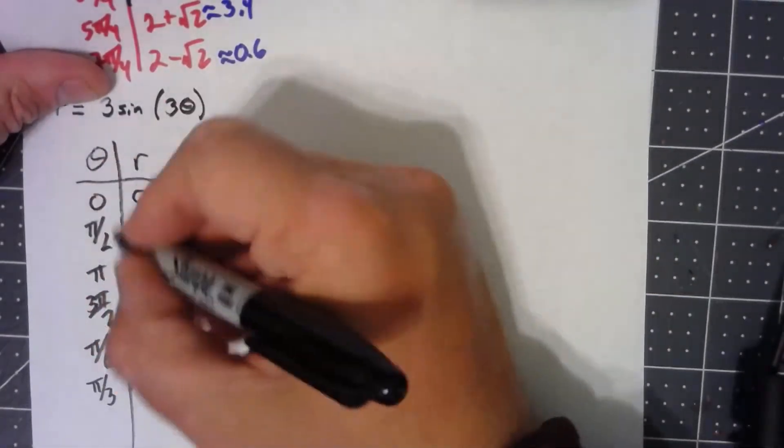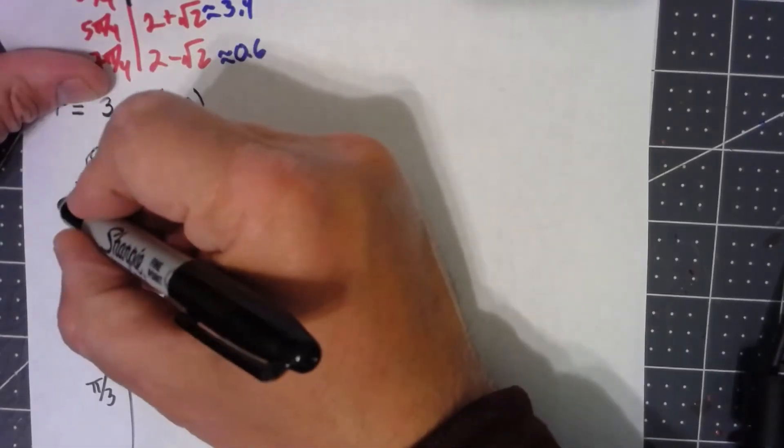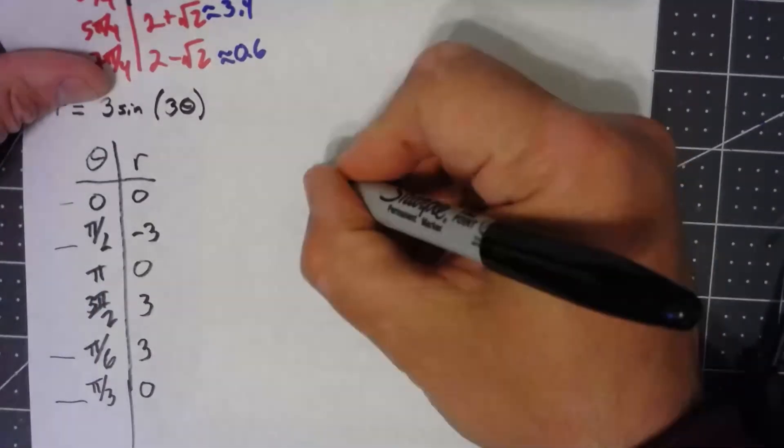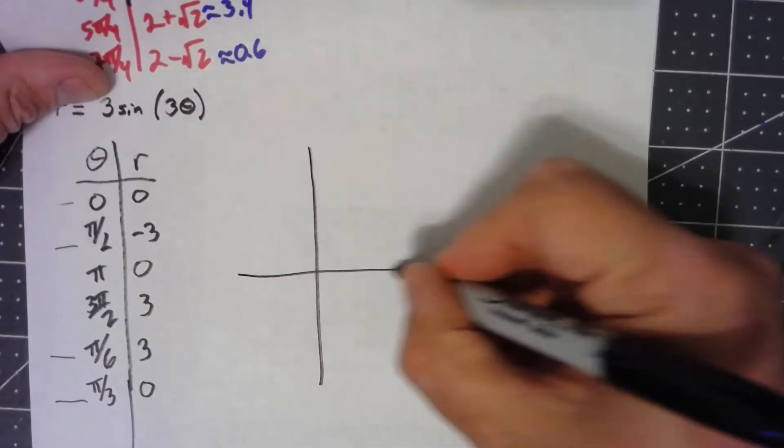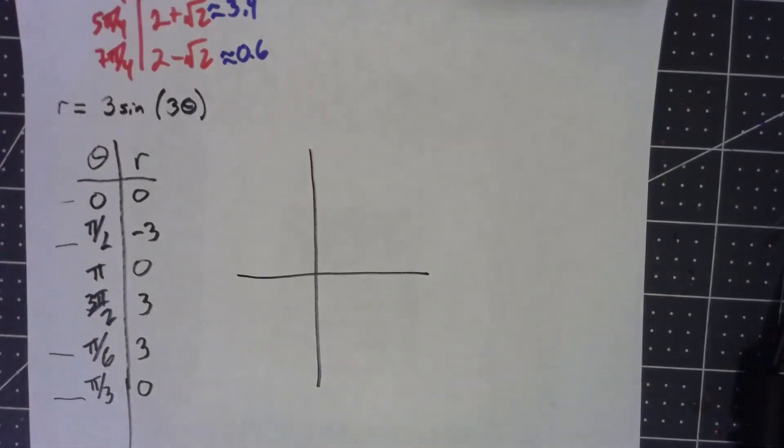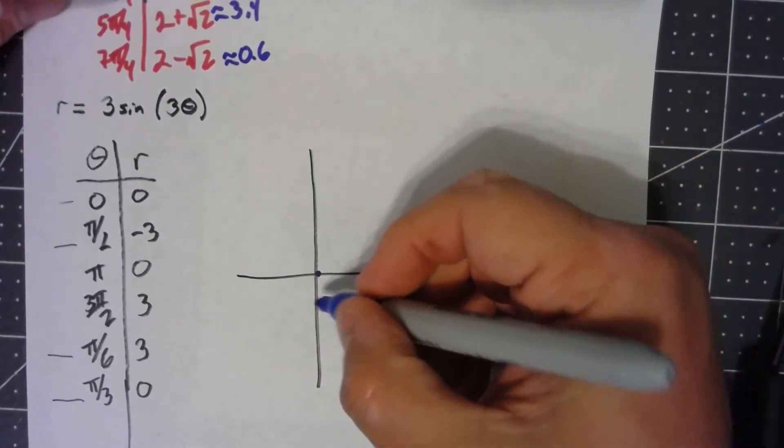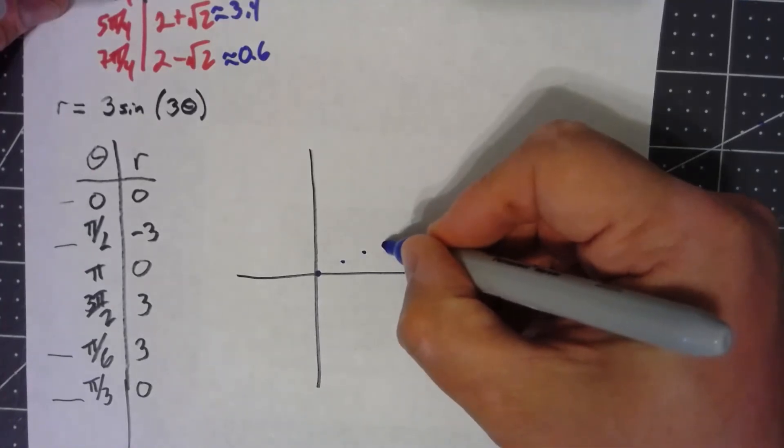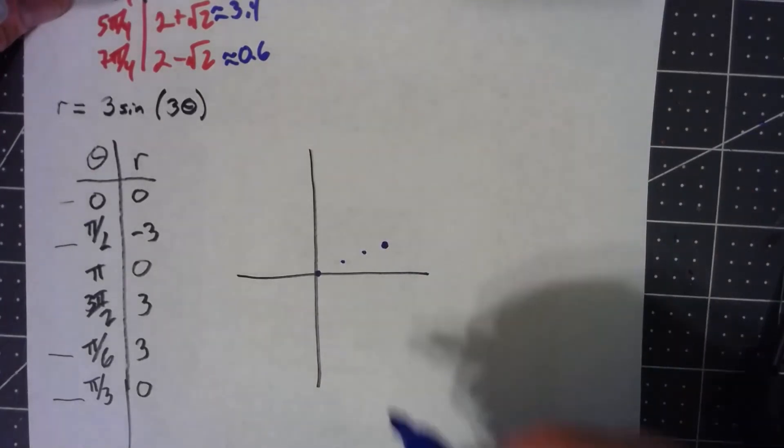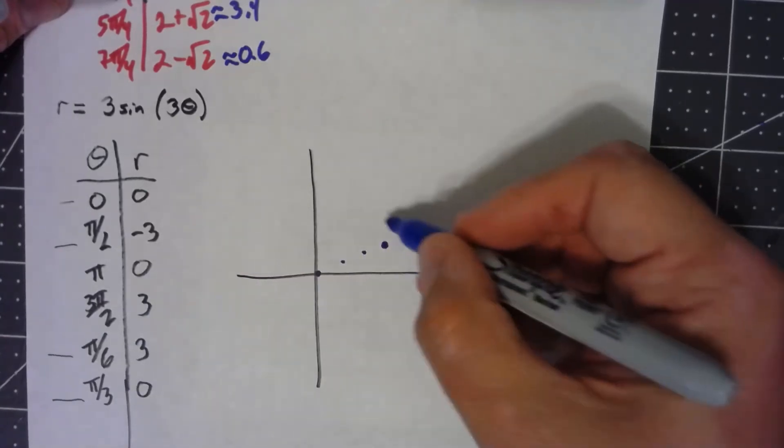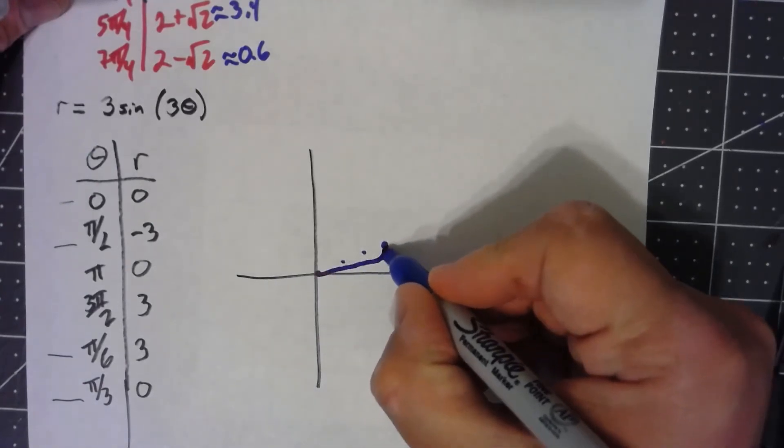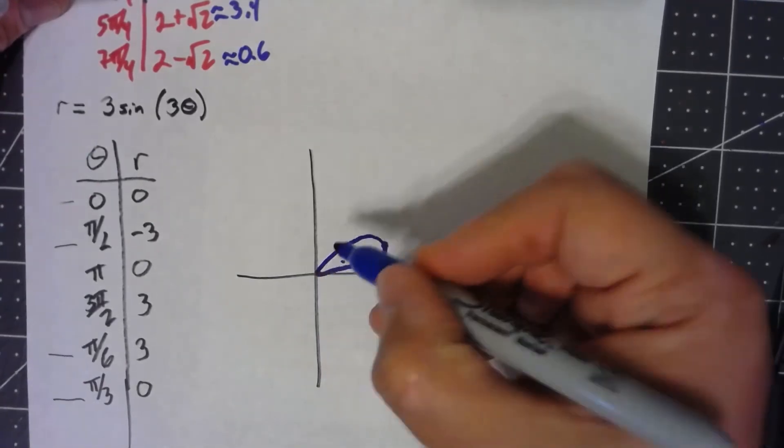Let's focus on that one, that one, that one, and that one for right now. At 0, we get 0, so we're going through the origin. Then at pi over 6, we're going out 3. So we're around right there. But then when we get to pi over 3, we're back to 0. What we're doing is we're kind of going out and then coming back like that.